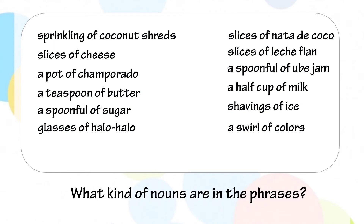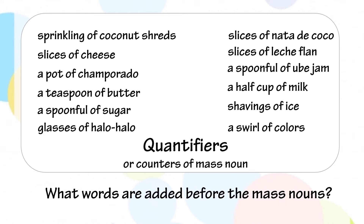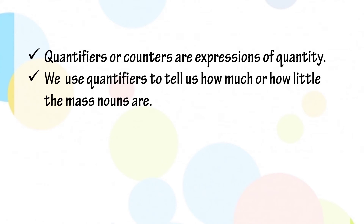What kind of nouns are in the phrases? We can see mass nouns in the phrases. The nouns that are used in the phrases are called mass nouns. What words are added before the mass nouns? Before the mass nouns, there are quantifiers or counters of mass nouns. Quantifiers or counters are expressions of quantity. We use quantifiers to tell us how much or how little the mass nouns are.